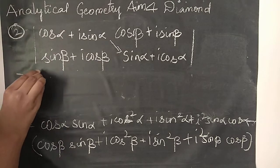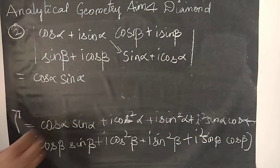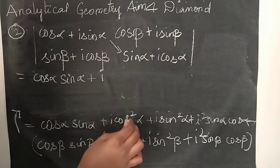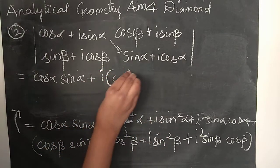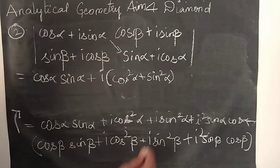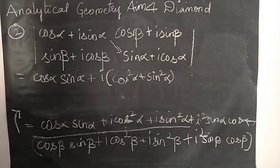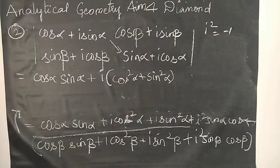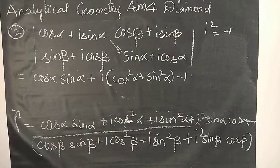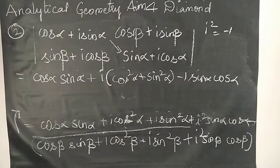From that we continue. The i squared value is minus 1, as discussed in previous packages. So plus into minus 1 is minus 1. We put minus 1, then sin alpha cos alpha. So the first part simplifies with the i squared term becoming minus sin alpha cos alpha.